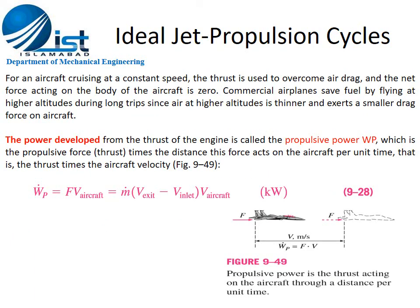In the analysis of the ideal jet propulsion cycle, using Newton's second law F equals MA, we can calculate thrust force and the power developed from thrust, called propulsive power W_P. Propulsive power equals F times V, where V is the velocity of the aircraft. Substituting F equals MA, this becomes W_P equals M-dot times (V_exit minus V_inlet) times V_aircraft, from equation 9-28.